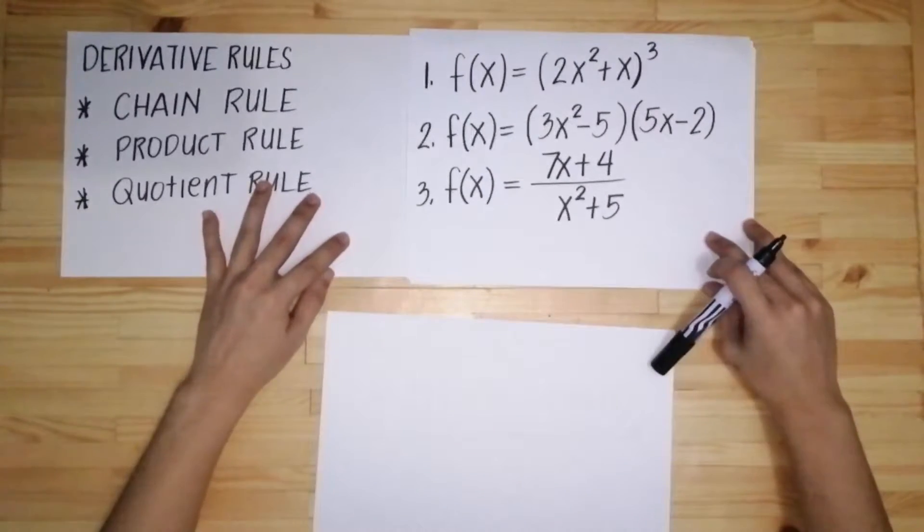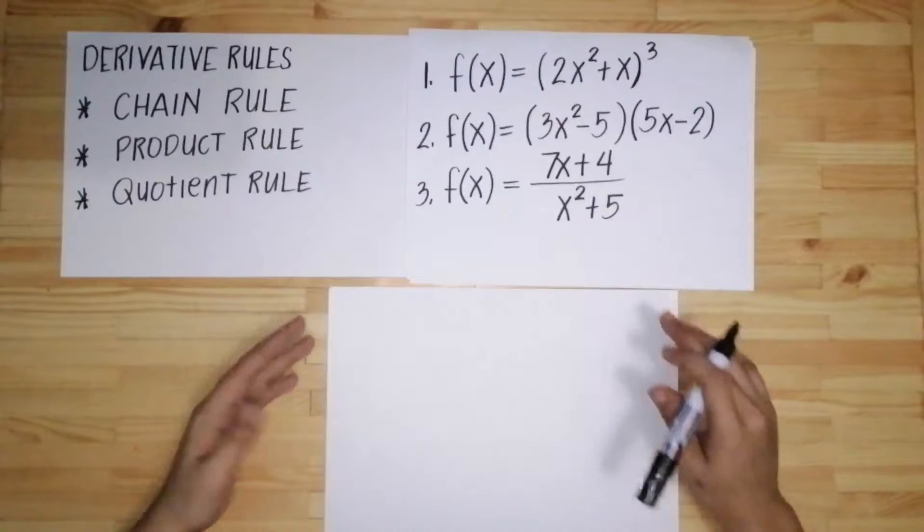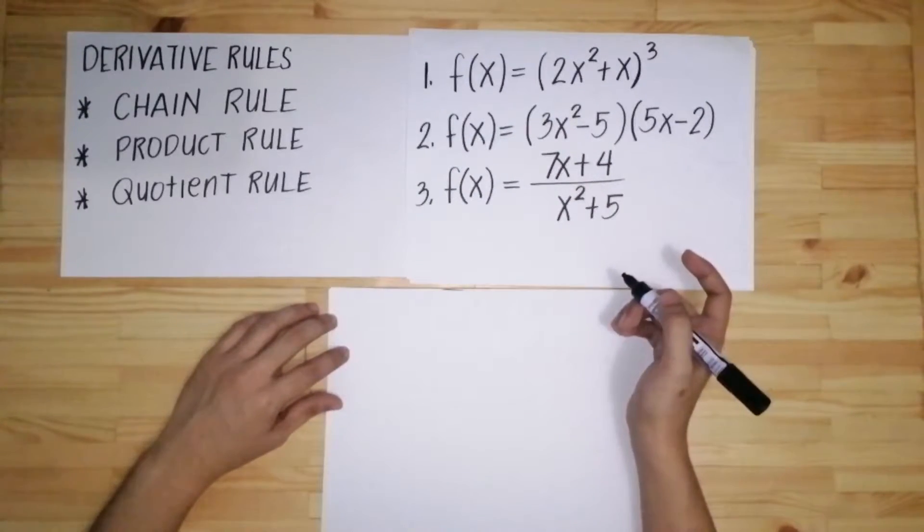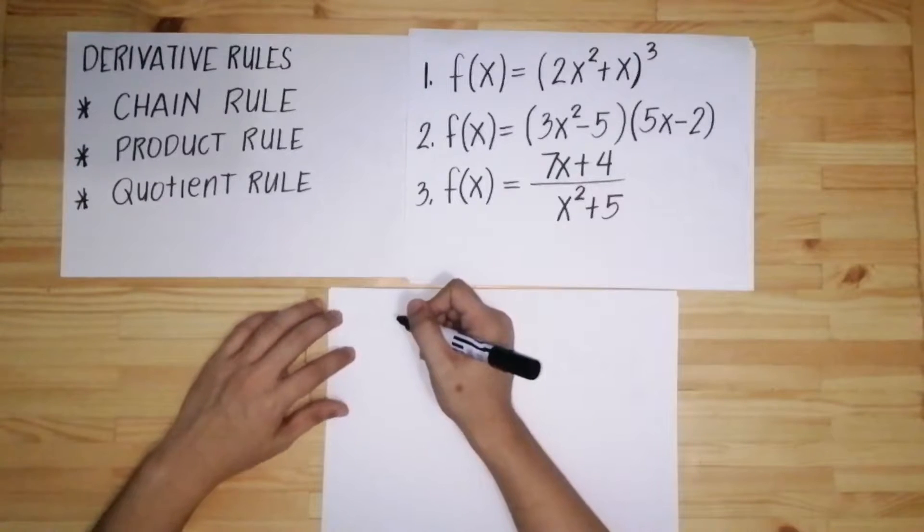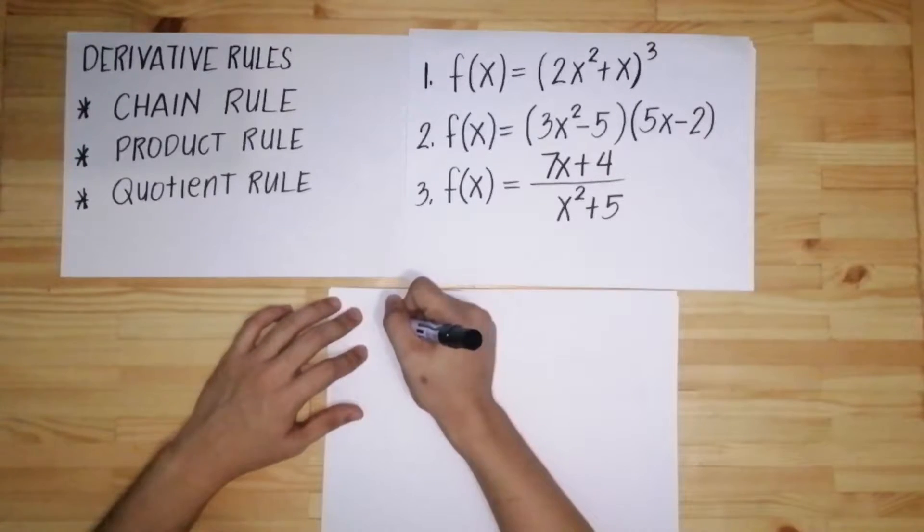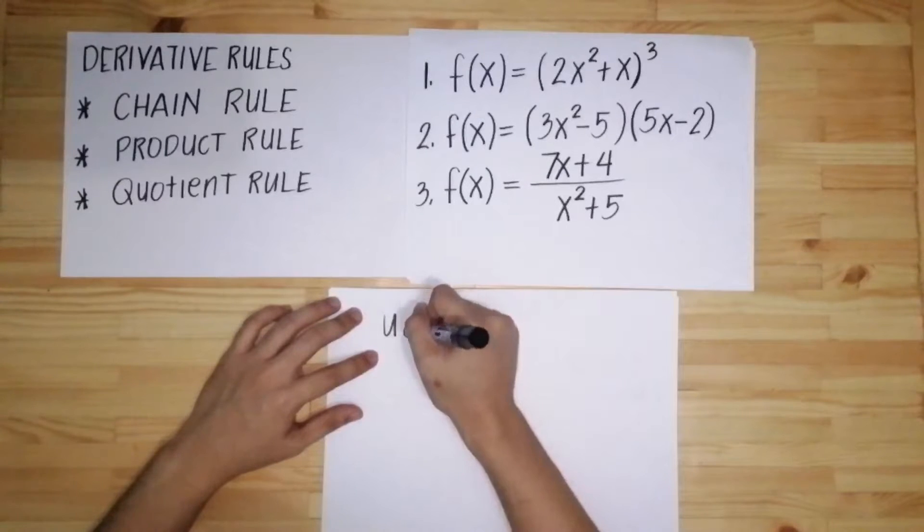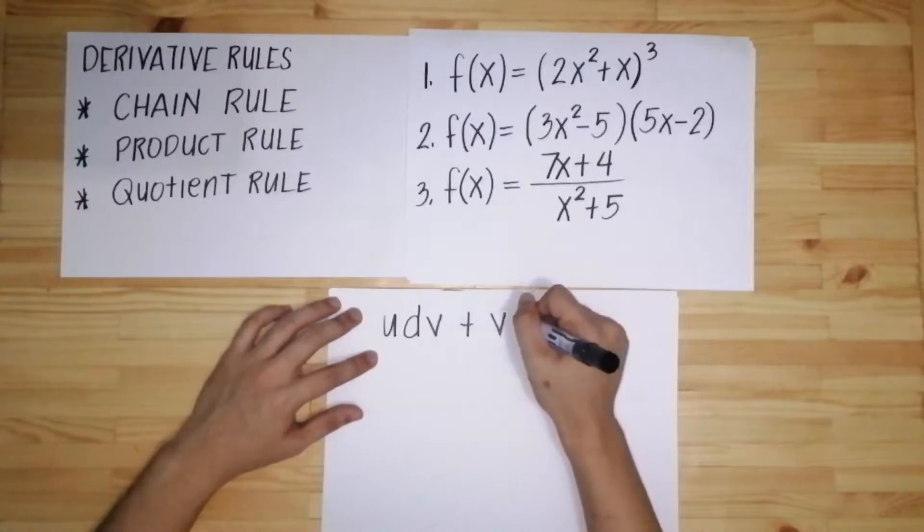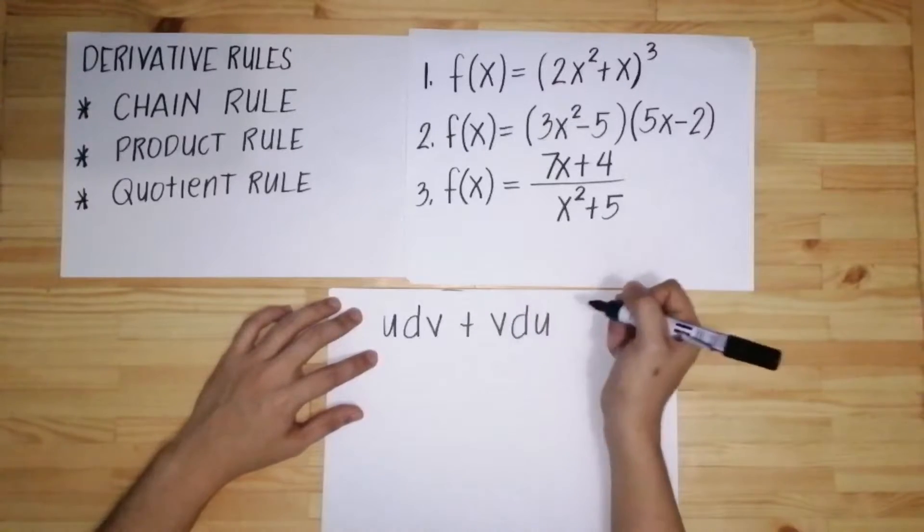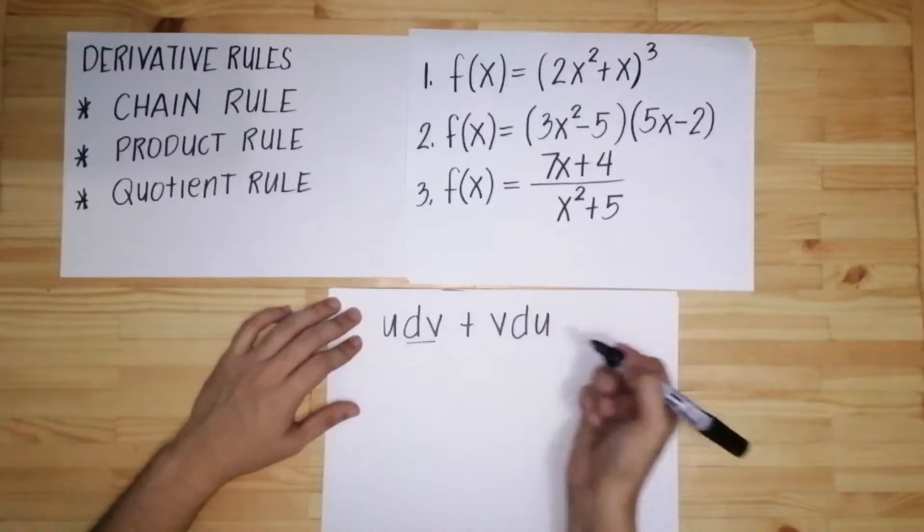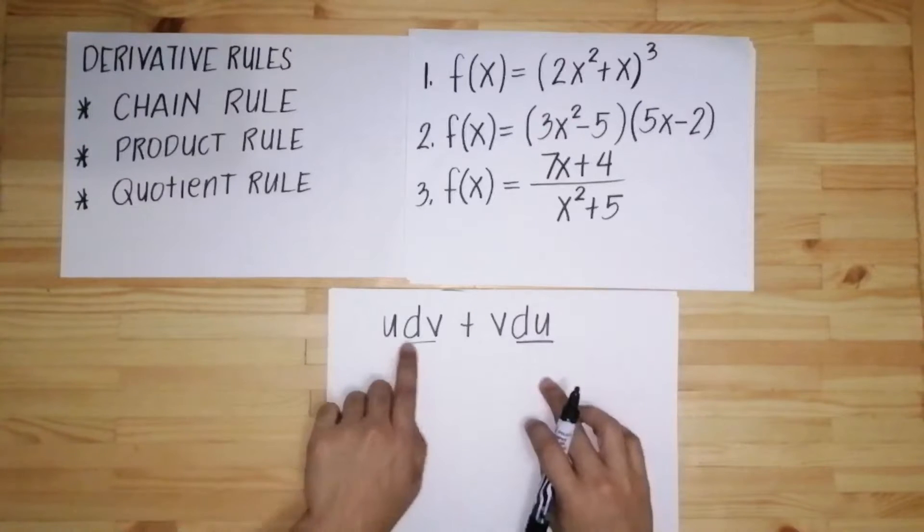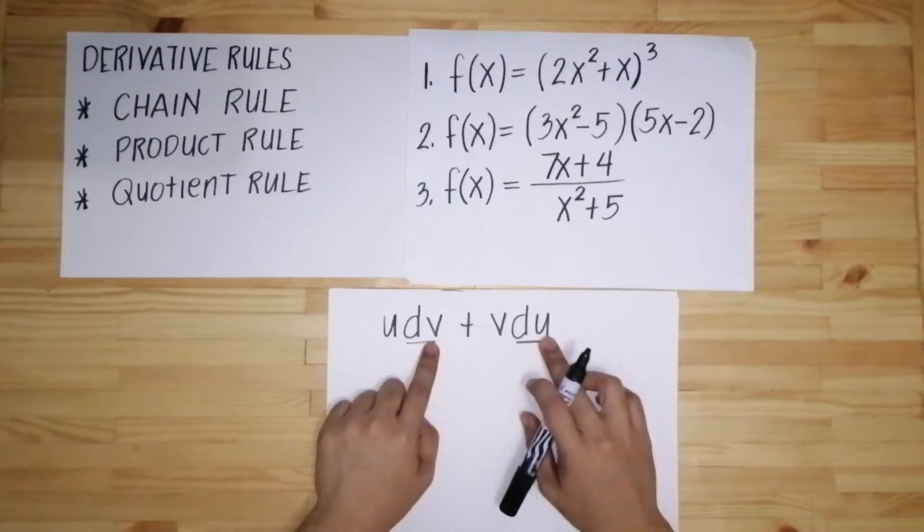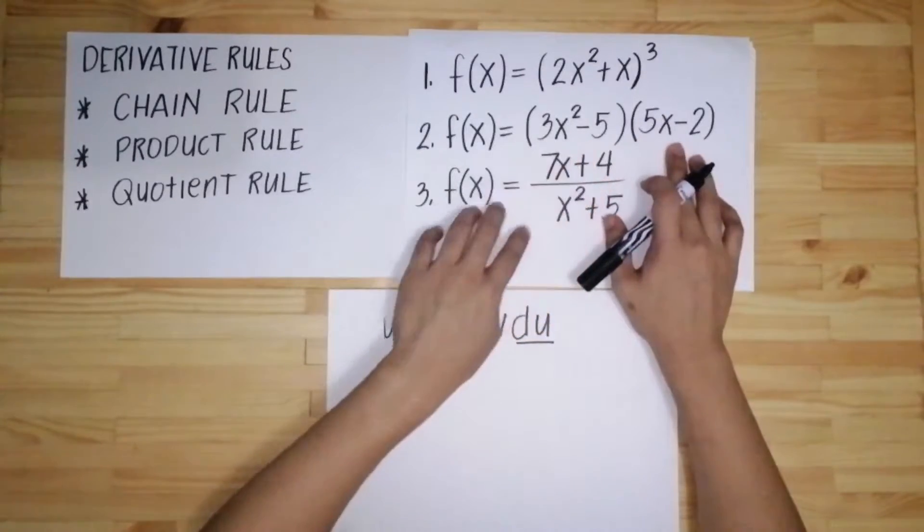In getting the derivative using product rule, gagamit tayo ng gantong formula. So meron tayong u dv plus v du. Itong dv tsaka du ay derivative ng v at derivative ng u. So pipili muna tayo sa dalawa kung sino yung magiging u at sino yung magiging v.